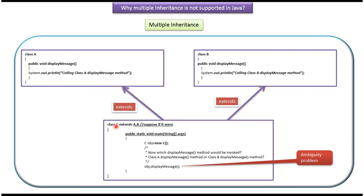And here you can see class C, which extends both class A and class B. Inside the main method, I am creating an object of C and I am calling the displayMessage method. The object of C doesn't know whether to call displayMessage of class A or whether to call displayMessage of class B, because it extends both A and B.